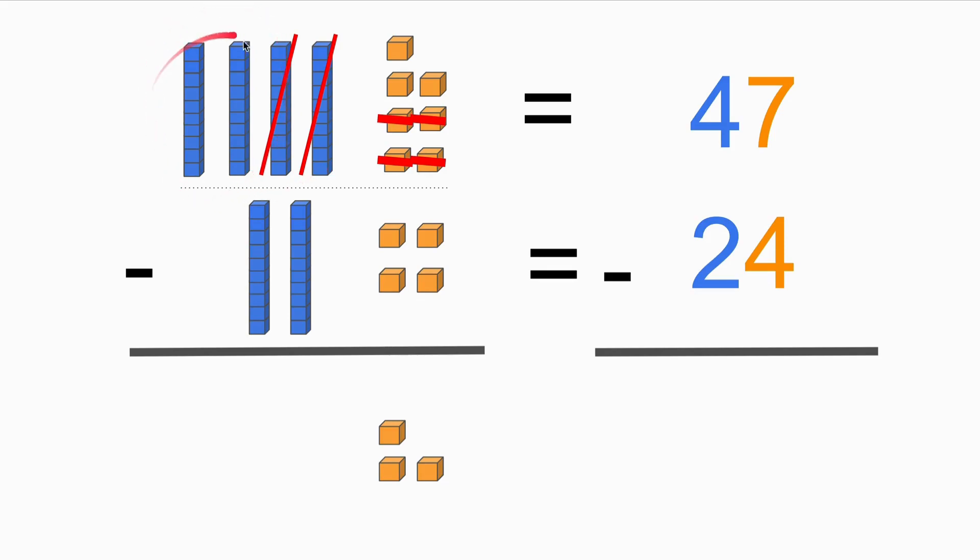And then how many do we have left? We just have two blocks left. So now we have a total of two left. So here let's count this, that's one, two, so two tens and one, two, three, three ones. So the result would be 23.